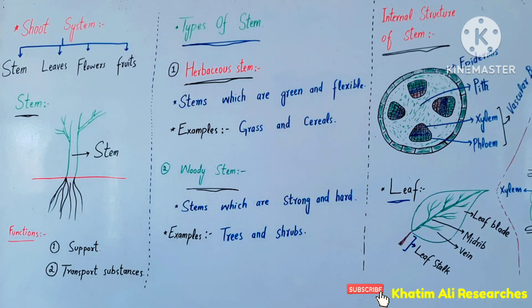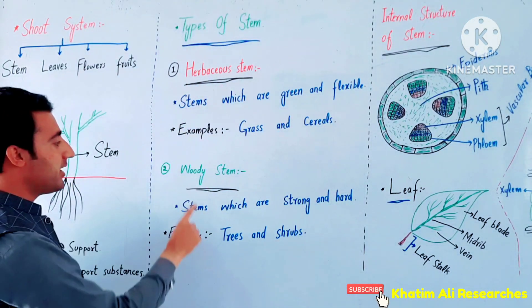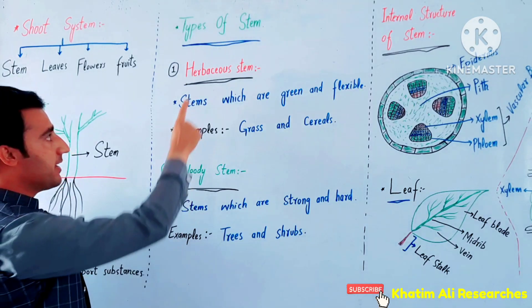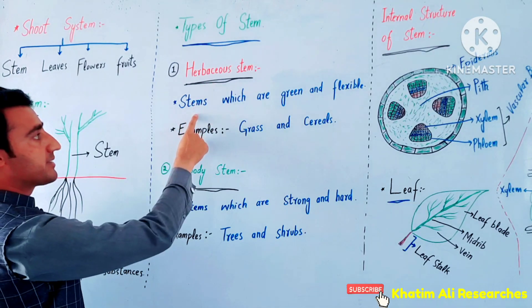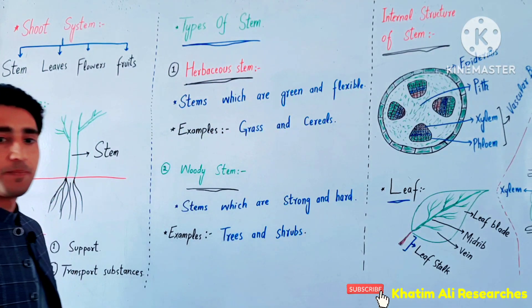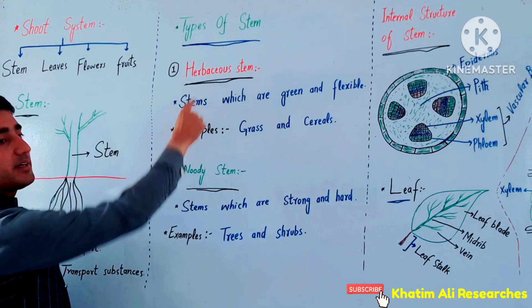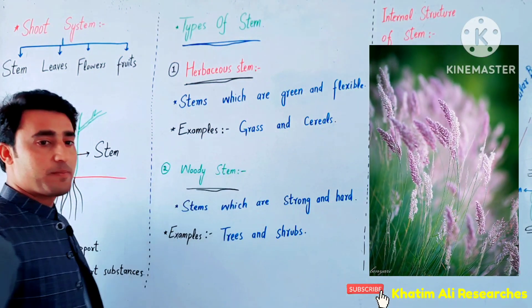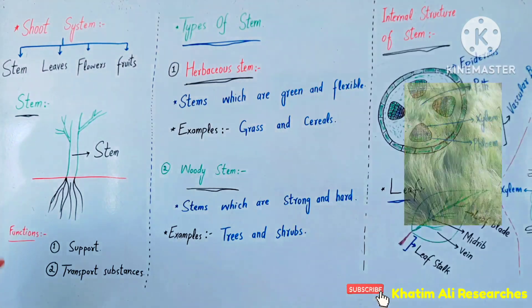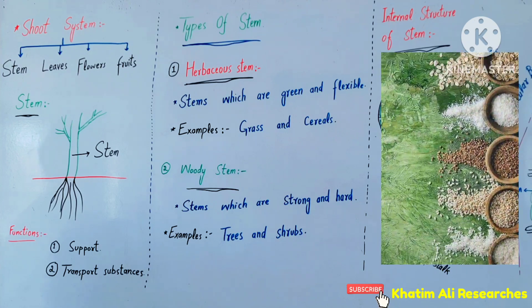Now the types of stems. There are two types: herbaceous stem and woody stem. Herbaceous stems are green and flexible. Examples of herbaceous stems include grass — these stems are soft and flexible.